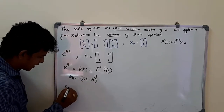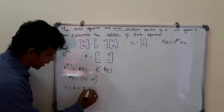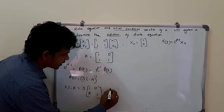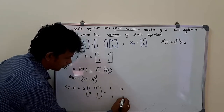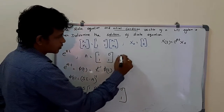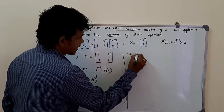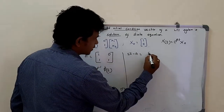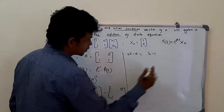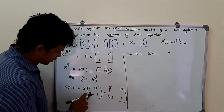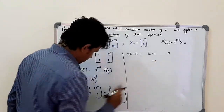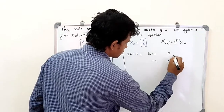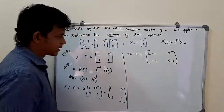Now, sI − A is equal to s times the identity matrix [1, 0; 0, 1] minus the system matrix A = [1, 0; 1, 1]. Computing this gives sI − A = [s−1, 0; −1, s−1].